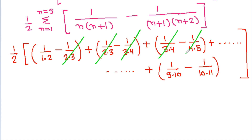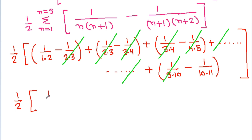The 1/(4×5) terms cancel, and continuing in the same way, the 1/(9×10) terms cancel. So we are left with 1/2 times 1/(1×2) minus 1/(10×11), which is 1/2 times 1/2 minus 1/110.